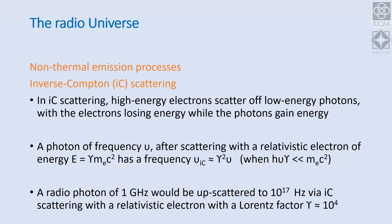Another process is inverse Compton scattering. In the normal Compton effect, a photon scatters off a stationary electron and loses energy to it. In a radio source, the highly energetic electrons can interact with low-frequency photons and up-scatter them to higher frequencies: the up-scattered frequency is γ² × ν. For example, radiation at 1 GHz interacting with an electron of γ = 10^4 would be up-scattered by a factor of γ² = 10^8, giving 10^17 Hz — well into the X-ray region of the spectrum.